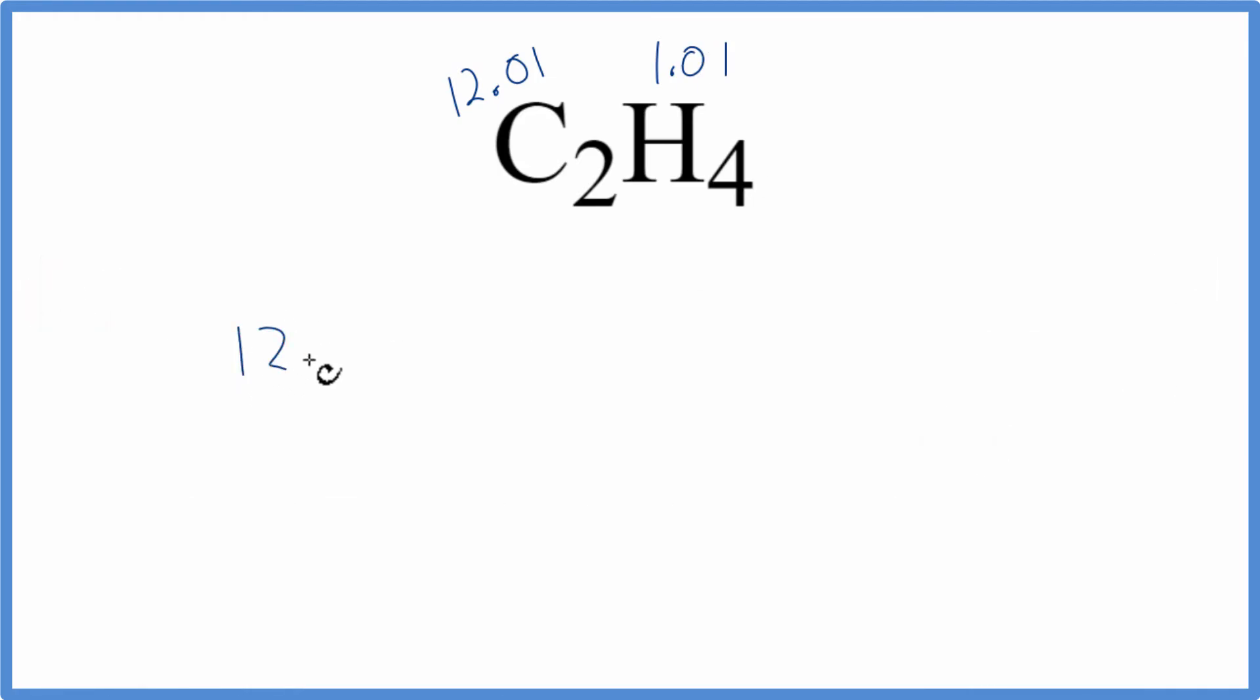So we have 12.01, and we have two of these carbons. So we need to multiply that by two, plus hydrogen is 1.01, and we have four hydrogens. So we'll multiply that by four.